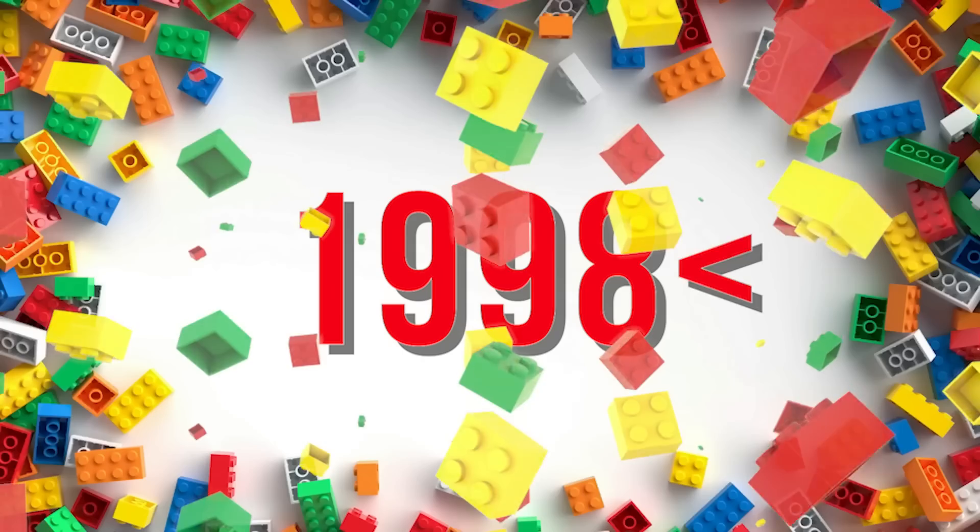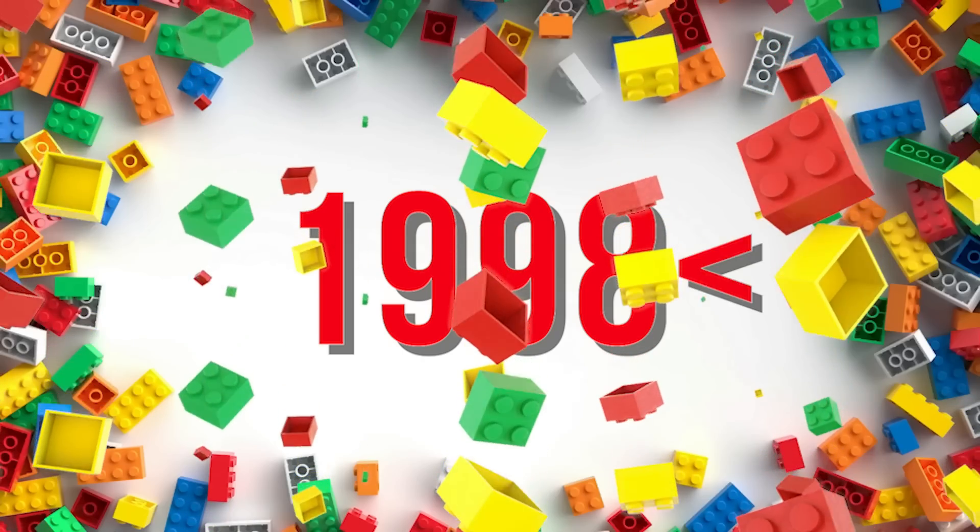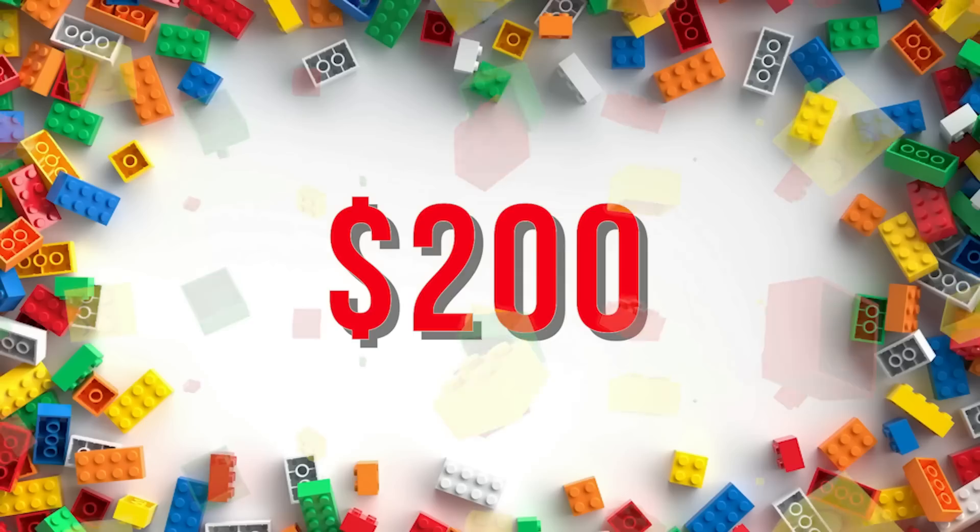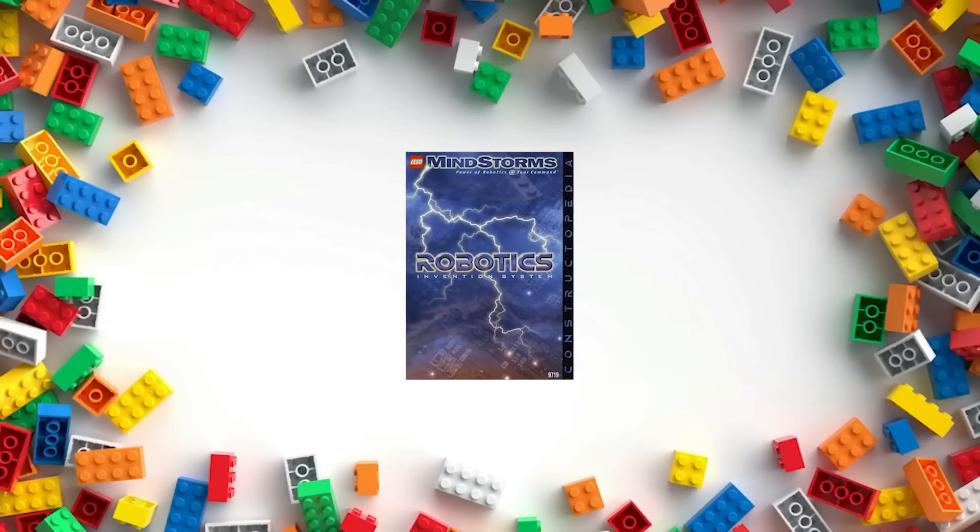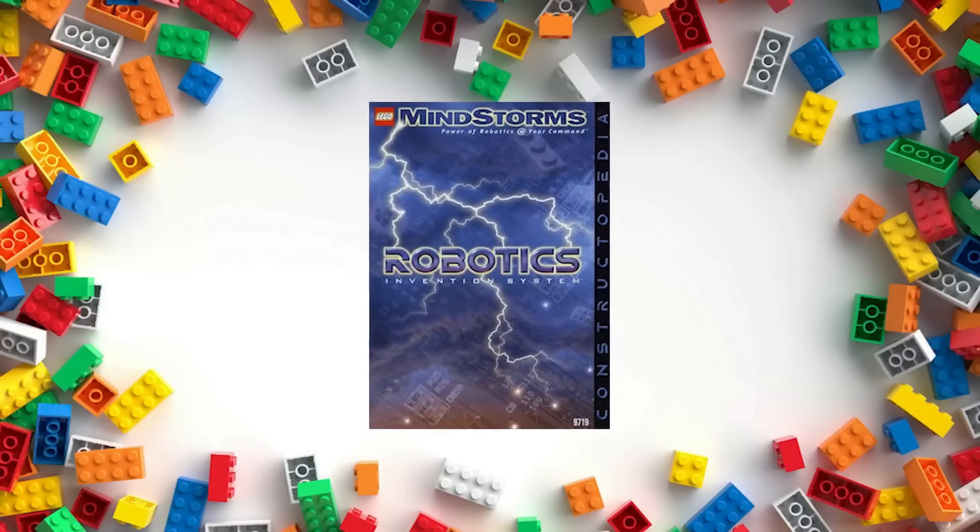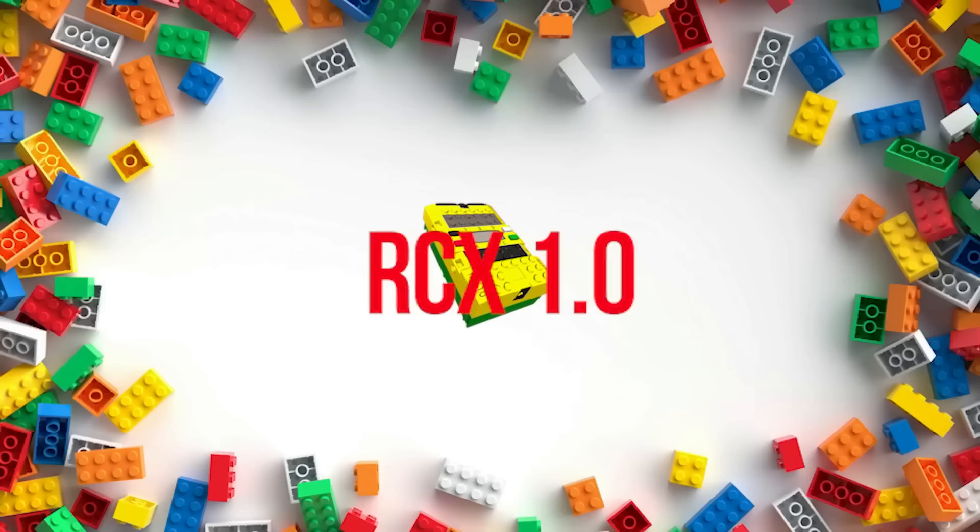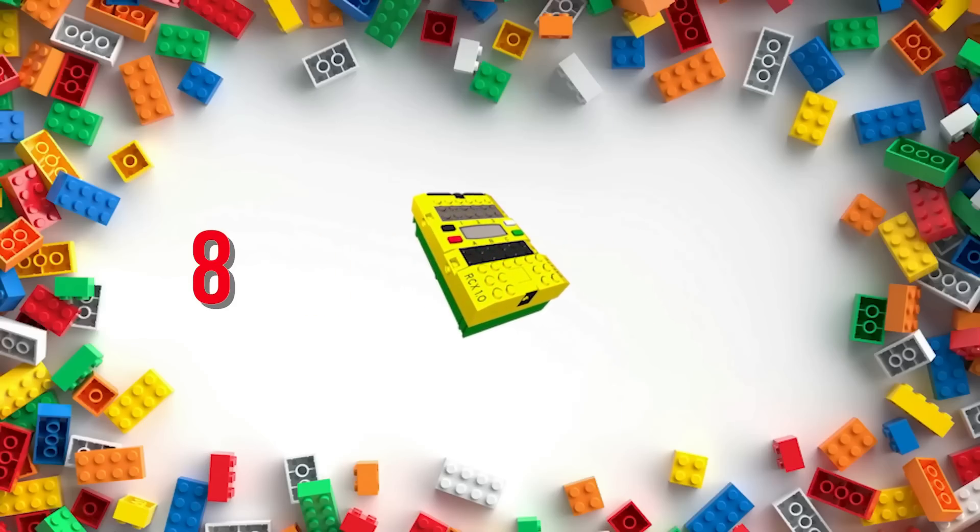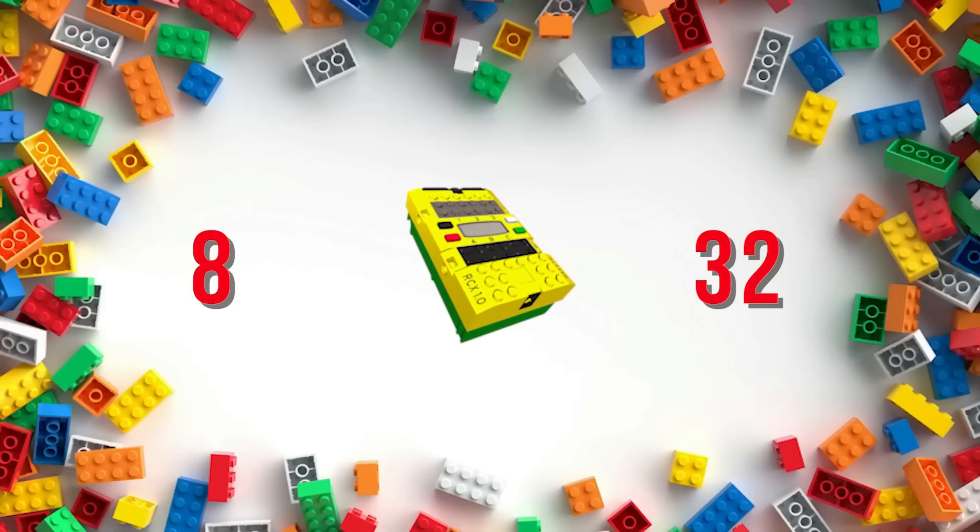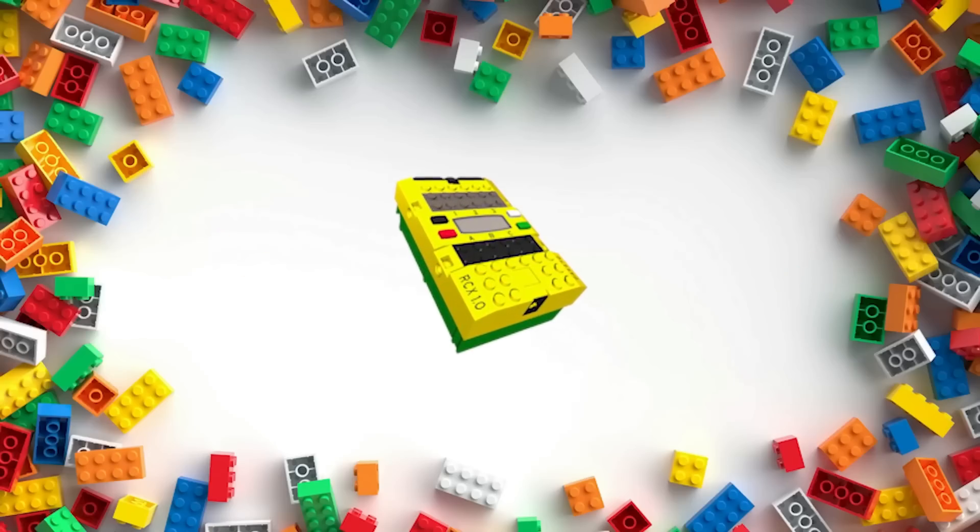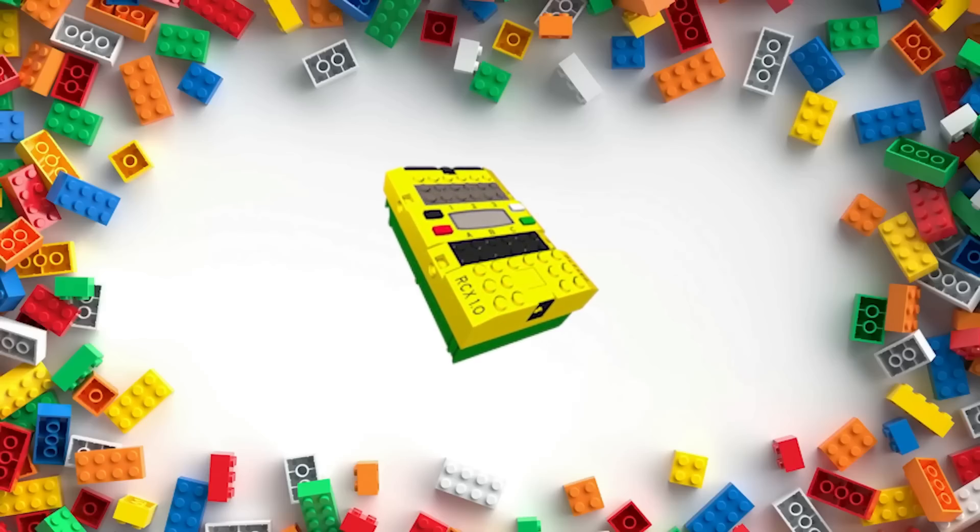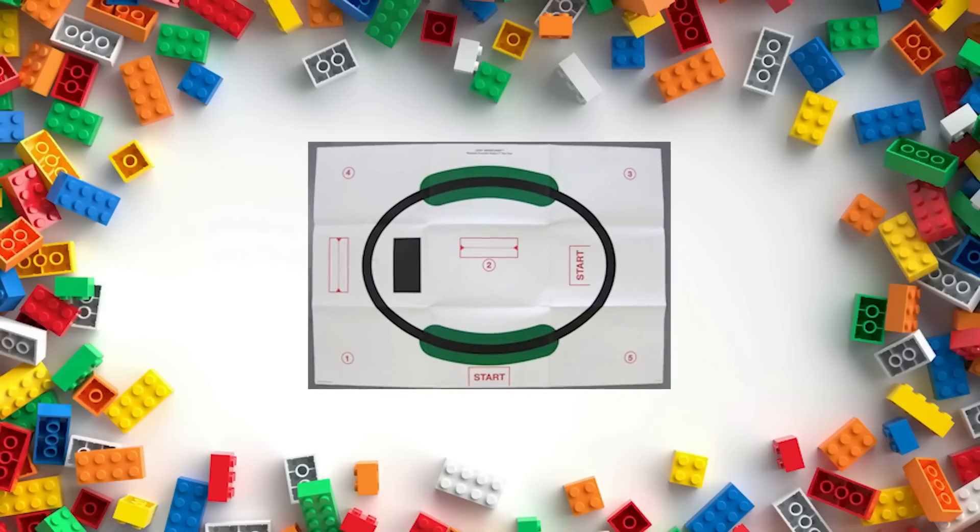In 1998, LEGO released the very first Mindstorms set for purchase. Selling for $200, set 9719, the robotics invention system, came with 733 parts. And most importantly, this, the LEGO RCX 1.0. This first version had an 8-bit microcontroller and a whopping 32 kilobytes of RAM for storing and executing programs. Also included in this set were several power cables, gears, technic pins, motors, multiple sensors, and this one-of-a-kind paper test mat.